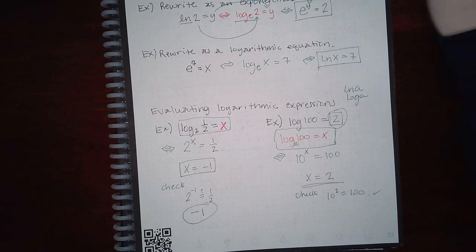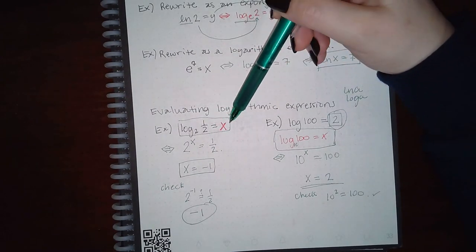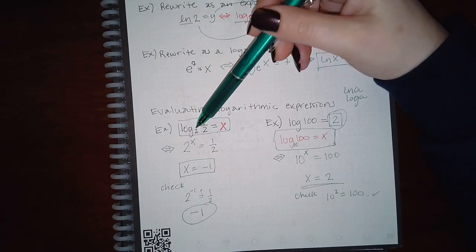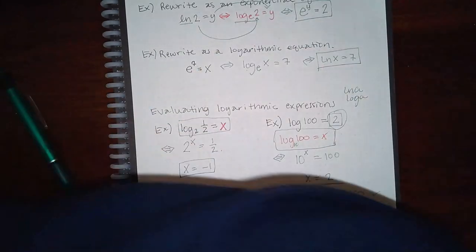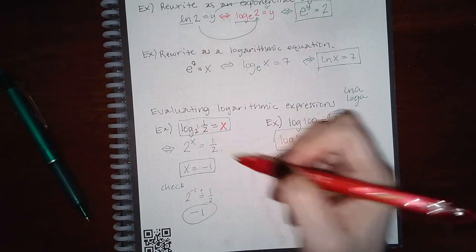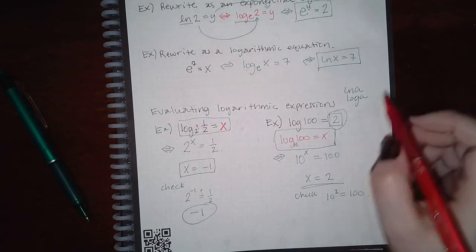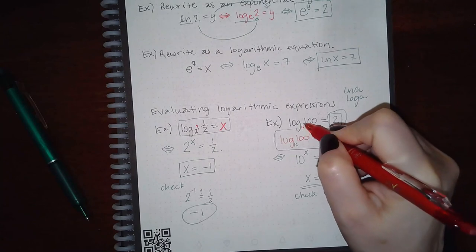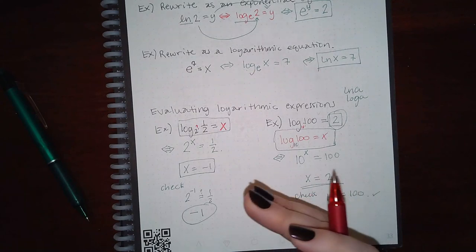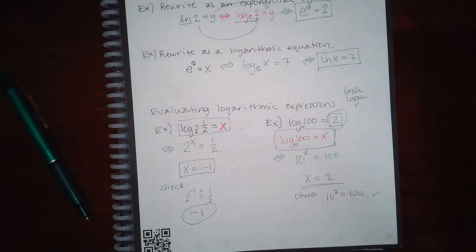Remember what you're doing: a logarithm is equal to an exponent, so you're asking yourself — if I have 2 to some exponent, how will I get one half? What will the exponent have to be? Same thing here: 10 to what exponent gives me 100? Well, 10 squared gives me 100, so the exponent is 2.